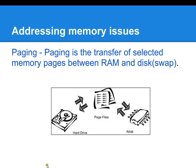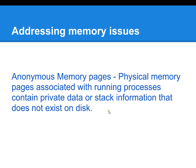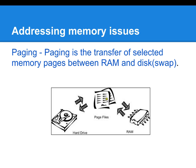Paging in and out — let's talk about anonymous memory pages. Physical memory pages associated with running processes contain private data or stack information that does not exist on disk. It's information the processor is currently working with that it can't put on disk because it hasn't produced any output yet. If there's something in memory that the system doesn't need, it will send those pages to the swap file and swap in the pages it needs to finish its computations.